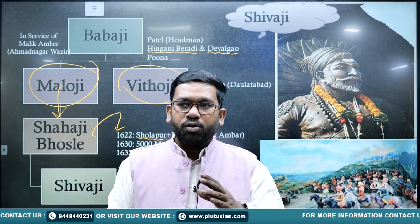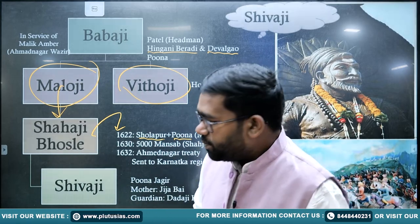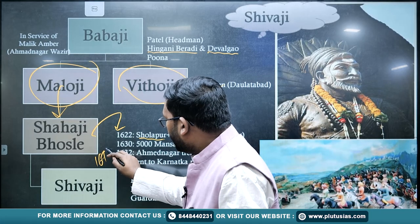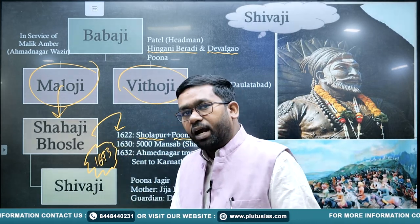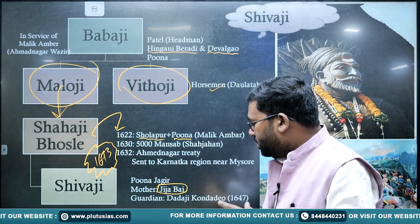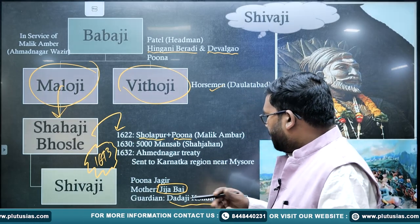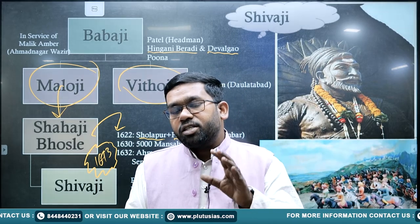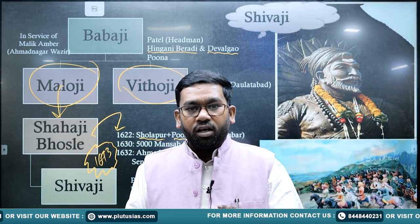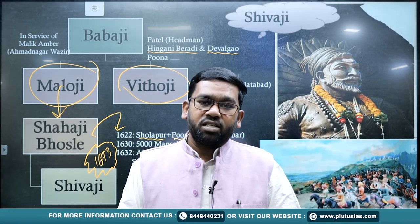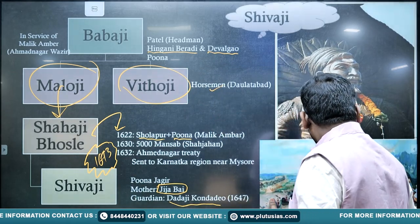In 1643, when his father had left, Shivaji was supported by his mother Jijabai and his guardian Dadaji Kondadev. With their support, he began conquering important areas. In 1643, Shivaji was not a king — nor was his father, who was just a Jagirdar. But with the support of his guardian Dadaji Kondadev, he was able to conquer major parts of the region.